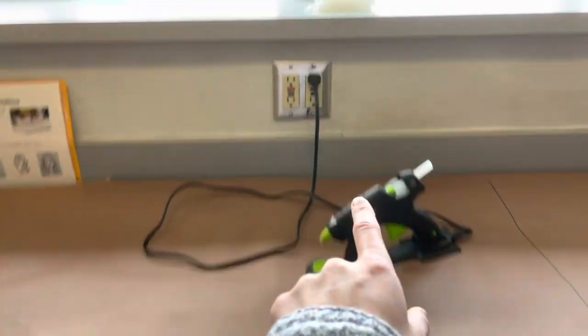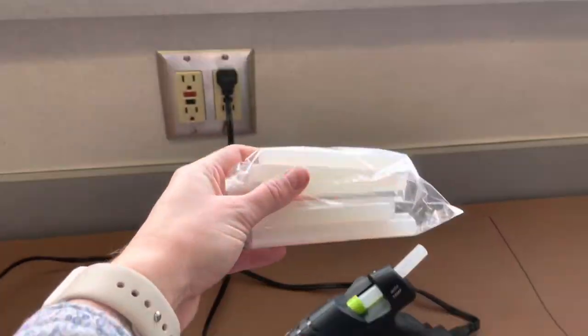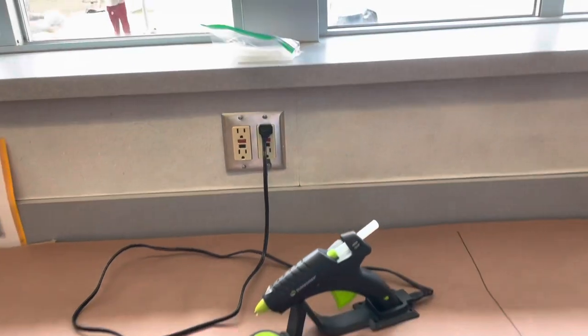Each station is going to have the hot glue gun. To refill, when this gets low or you can't squeeze any more out of the tip, there are going to be hot glue sticks up here that you can replace them with. But once the hot glue sticks are gone, they're gone.